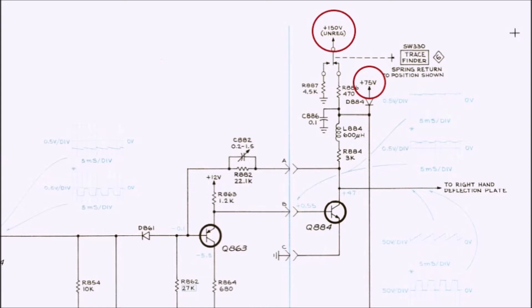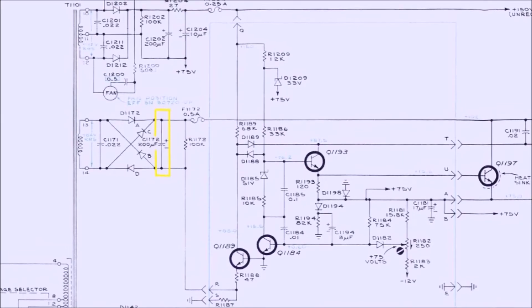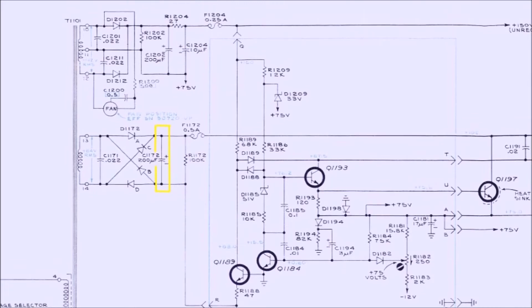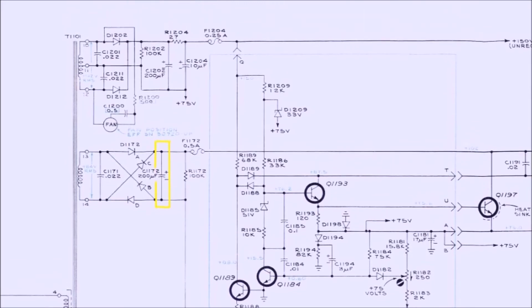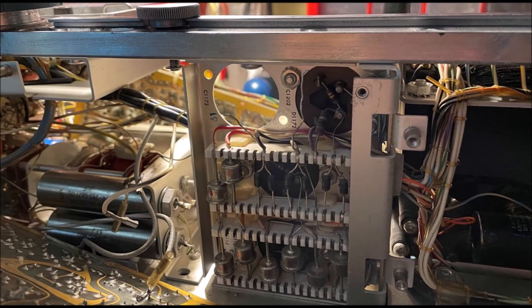And by looking at the schematics, one can see that the positive 75 volt supply must somehow be involved in this strange fishbone noise by virtue of seeing it on the beam finder. So I decided to try to change the positive 75 volt 200 microfarad capacitor C1172 on the schematic and see what happened.